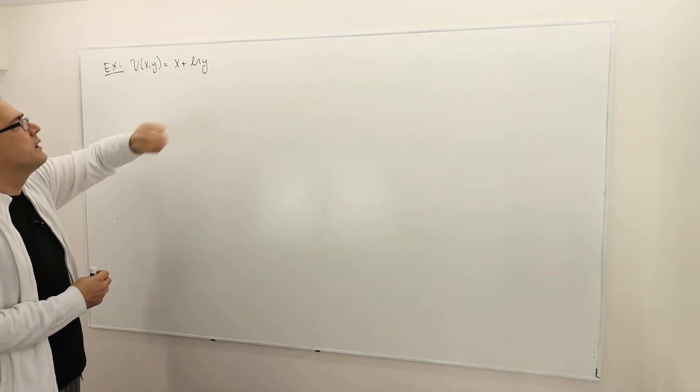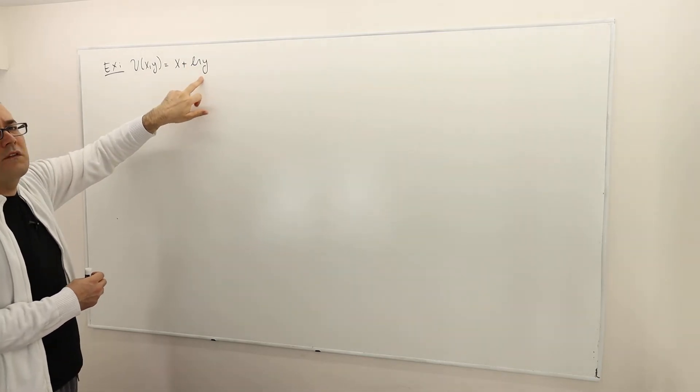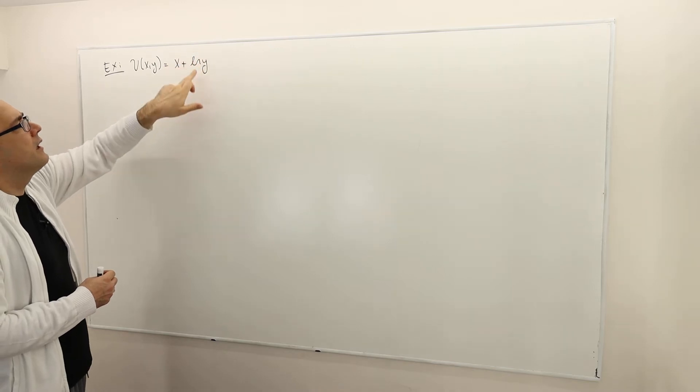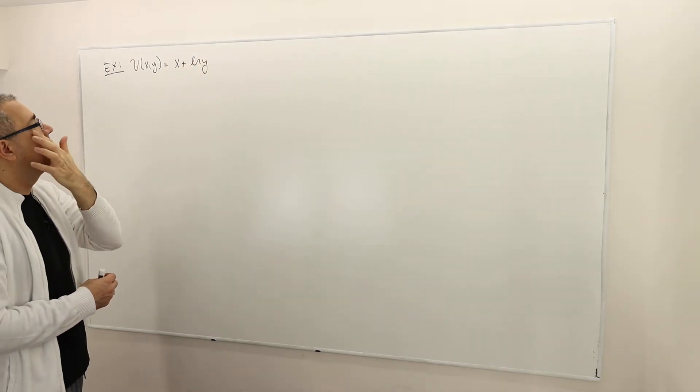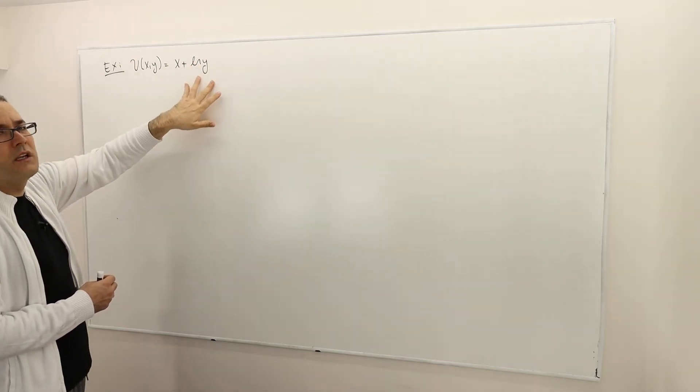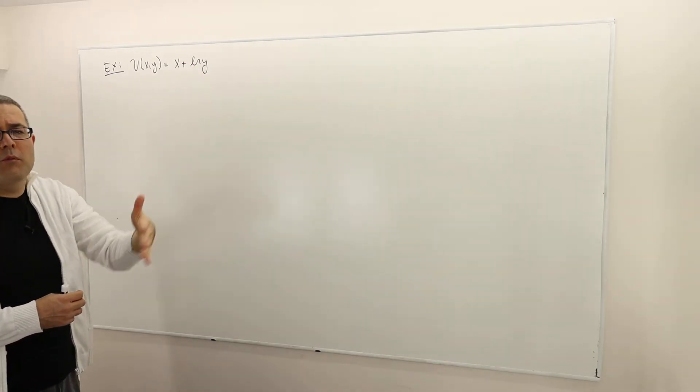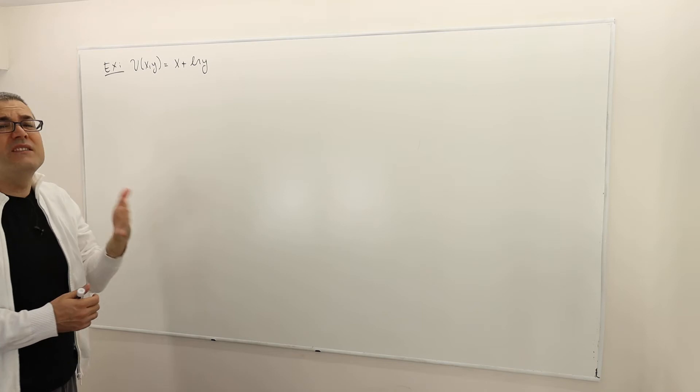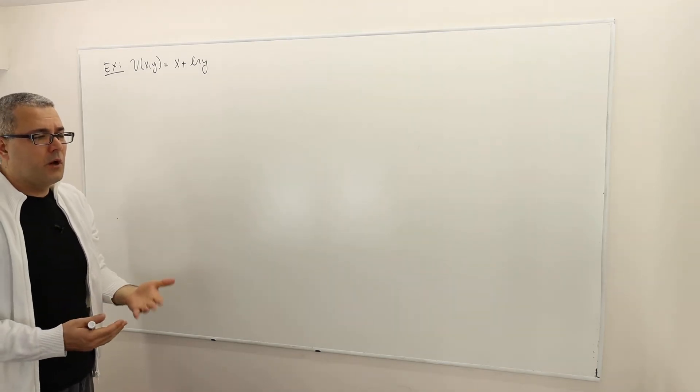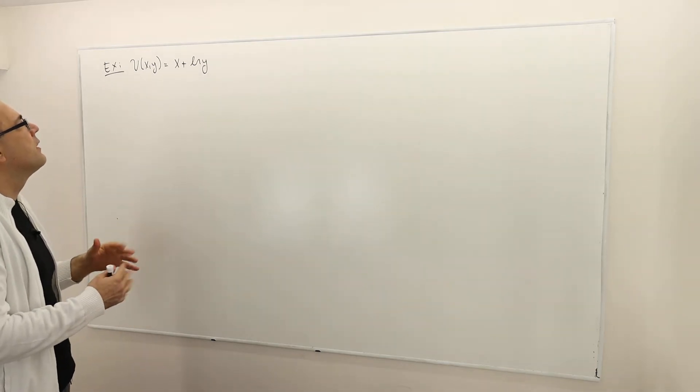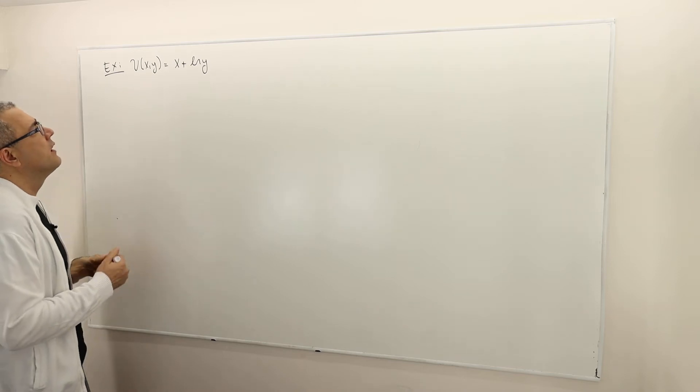The second part is concave in the second variable y. Here ln is just arbitrary. It could be any concave function of y. For example, x plus square root of y would probably behave a pretty similar way. I don't mean the optimization results will be the same but the utility function behaves a similar way.